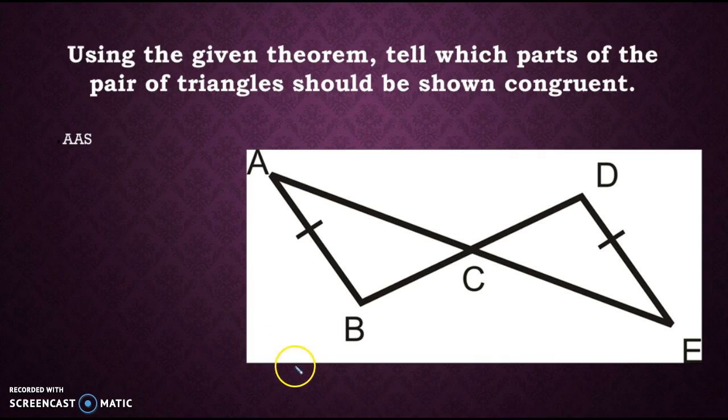The other type of question you will see is you're going to be given the congruence theorem that you want it to be congruent by. So in this case, we've got angle, angle, side. And we've got these two triangles here. And I need to figure out what else it needs to be congruent by angle, angle, side, as well as go ahead and write my congruence statement.